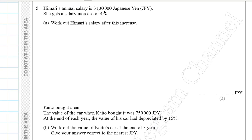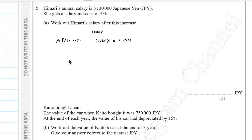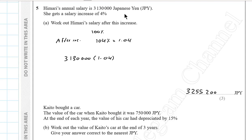Question 5a. Himery's annual salary is 3,130,000 Japanese yen. She gets a 4% salary increase. The original amount represents 100%, so after the increase she receives 104%, which is a multiplier of 1.04. So 3,130,000 × 1.04 = 3,255,200 Japanese yen.